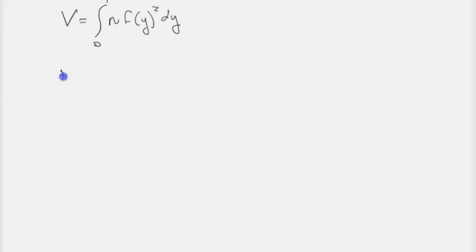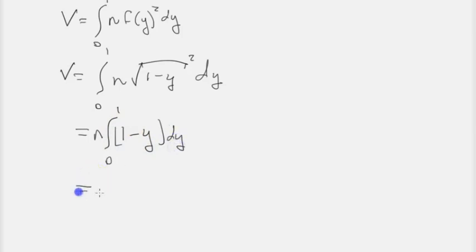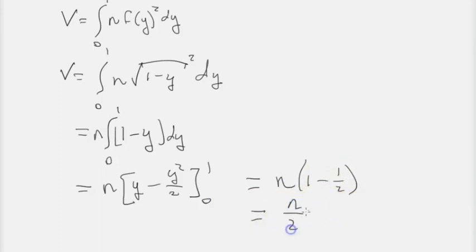Here is our expression for volume. When we plug in the function of y, we get pi times (root(1 minus y)) squared with respect to y. Squaring removes the root, and we take pi out to get pi times the integral from 0 to 1 of (1 minus y) dy. Integrating: the 1 becomes y and the y becomes y squared over 2, evaluated from 0 to 1. Plugging in 1 gives 1 minus 1/2. The 0 goes away, and 1 minus 1/2 gives 1/2. So we get pi over 2.